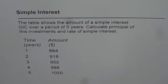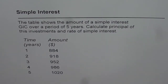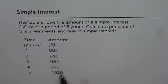Simple interest: the table shows the amount of a simple interest GIC over a period of five years. We need to calculate the principal of this investment and the rate of simple interest. What we notice is that every year the amount increases, and since it is simple interest, it has to increase by a constant number — that constant is the interest per year.